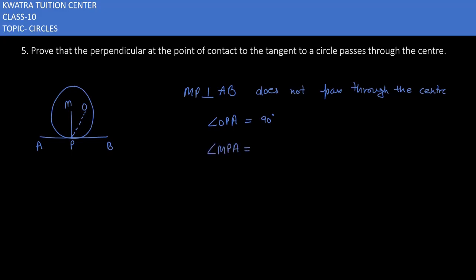MP is perpendicular to AB, so we have 90 degrees. This is given, angle MPA is already 90 degrees. So we'll get that OPA is equal to MP. This is only possible if point O and M coincide with each other.